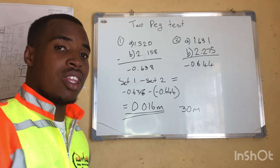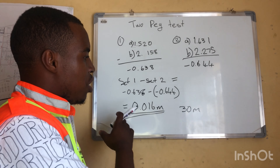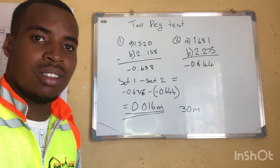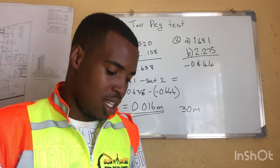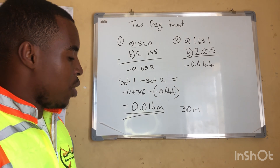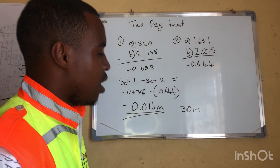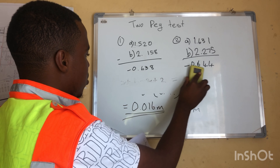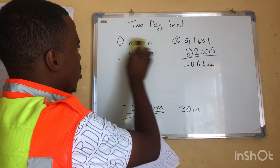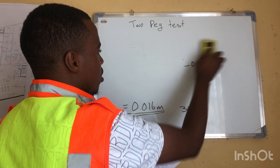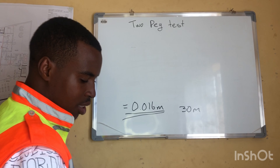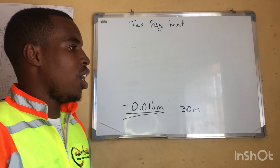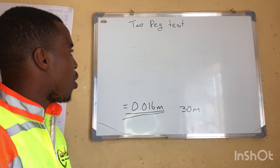Depending on the work you are doing, this error might be acceptable or not acceptable. If it's acceptable, you can continue and ignore the error, or you can do the adjustment for the error every 30 meters. You might also be asked to calculate what we call the angle of collimation.